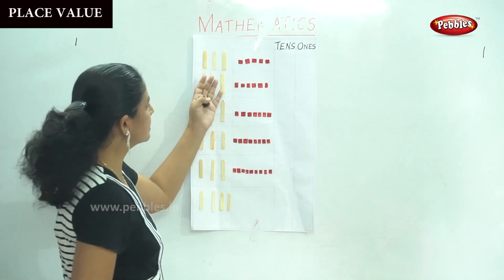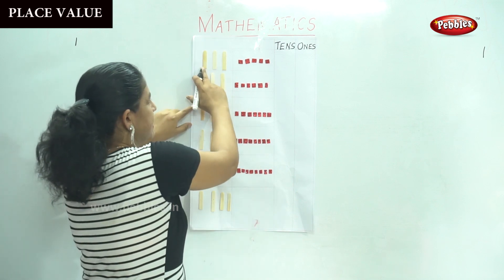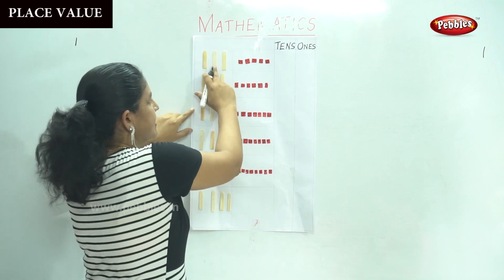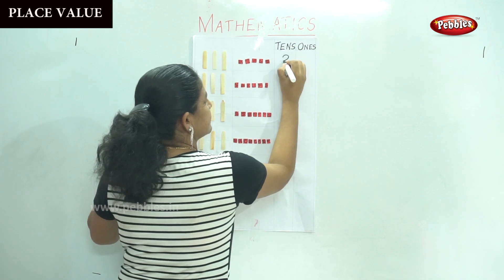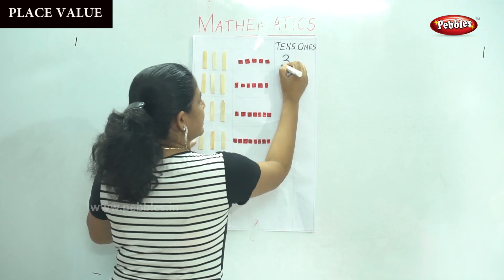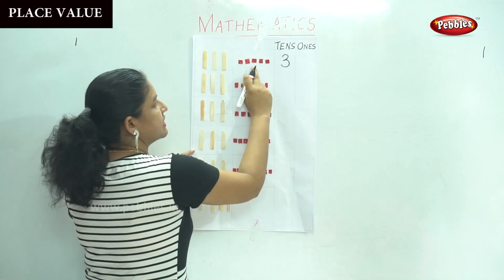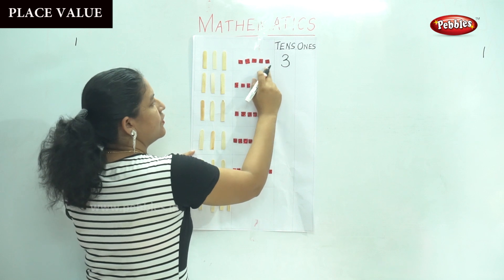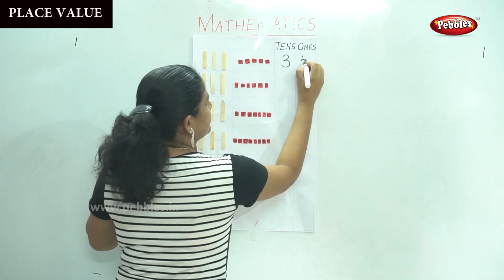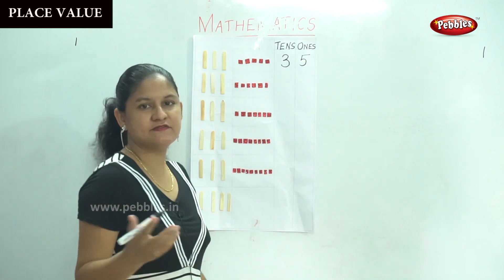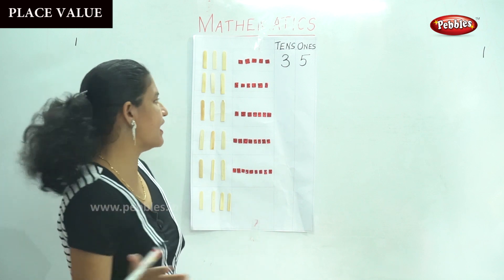So in the tens place we have ten, twenty, thirty — three tens. And in the ones we have one, two, three, four, five — five ones, which gives us the number thirty-five.